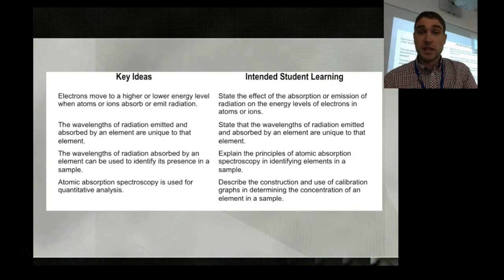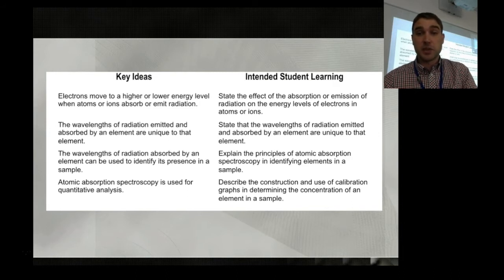What do you need to be able to do? State the effect of absorption or emission of radiation on the energy levels of electrons in atoms or ions. State that the wavelengths of radiation emitted and absorbed by an element are unique to that element. Explain the principles of atomic absorption spectroscopy and describe the construction and use of calibration graphs. I've made a separate video looking at making calibration graphs, so that won't be in this one.